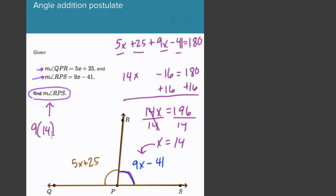9 times 14 minus 41. 9 times 14, well, 9 times 10 is 90. 9 times 4 is 36. That's 126. Minus 41. Okay, here we'll do some basic subtraction, right? 6 minus 1 is 5. Cancel, borrow. 12 minus 4 is 8. So it is 85 degrees.